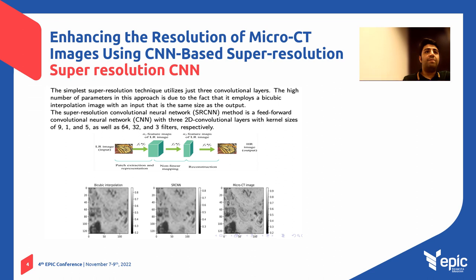As you can see, the bicubic interpolation image is produced first. In basic SRCNN, you have to use an image with the same size as the high resolution output, so bicubic interpolation is applied first to upscale the image before passing it to the network. You can see that SRCNN captures some details not present in the bicubic result — for instance, in the area with a large pore — but it is not fully sufficient and cannot capture all the microstructure that exists in the high resolution image.